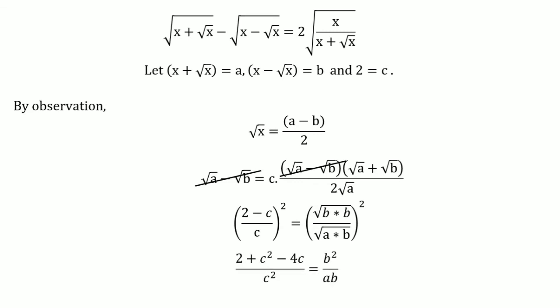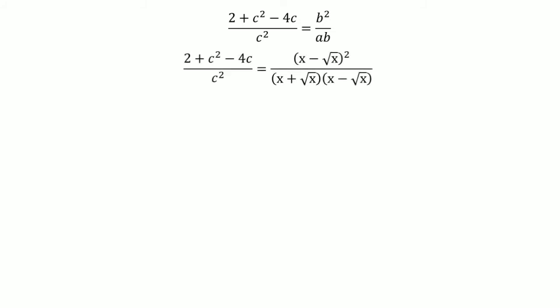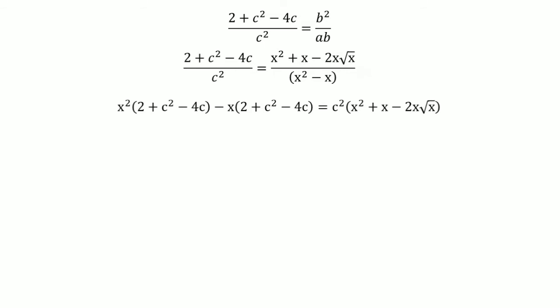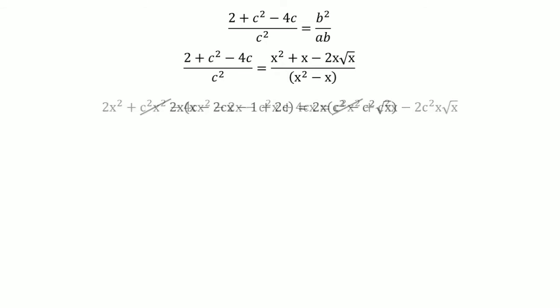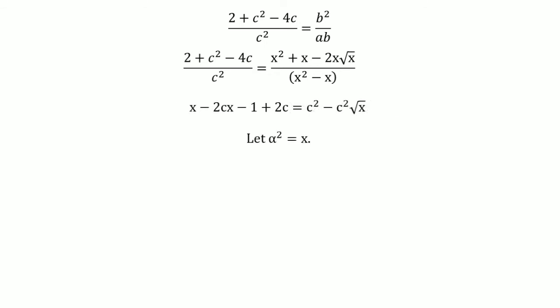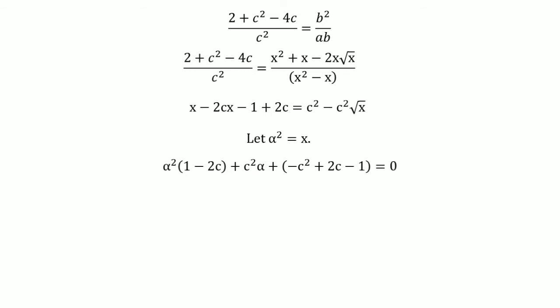Multiplying the numerator and denominator by b on the right-hand side and then squaring both sides, and using the (a − b)² formula, we arrive at a simplified expression. Putting the values of b and a back in, cross-multiplying, and opening the parentheses, then canceling c²x² on both sides and taking 2x as common, and dividing both sides by 2x, we get a cleaner equation. Letting α² = x, we form it as a quadratic polynomial: 0 = α²(1 − 2c) + c²α + (2c − 1 − c²).